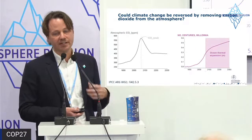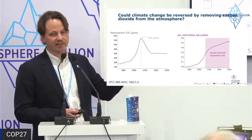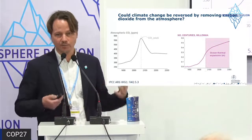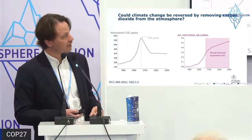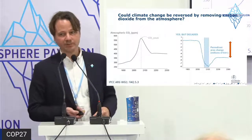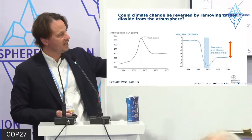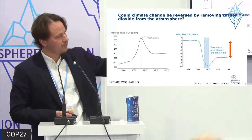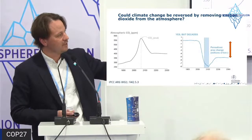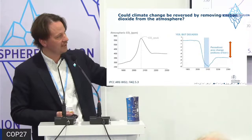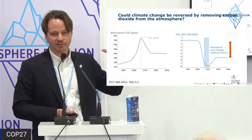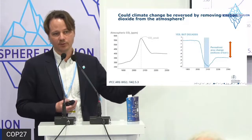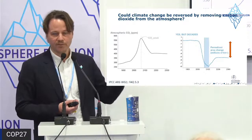The IPCC also identifies other feedbacks that are not reversible — this doesn't necessarily mean tipping points, just that they act on very long timescales, like ocean thermal expansion. Looking at permafrost area change again: even if it might be reversible, permafrost stabilizes at a much lower level — roughly five or six million square kilometers — that will keep emitting greenhouse gases for several centuries.